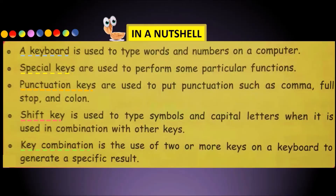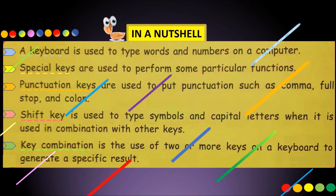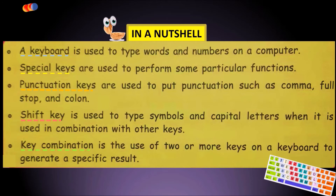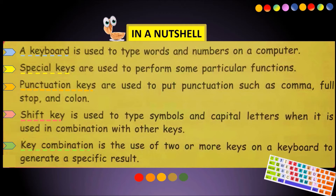In a nutshell: a keyboard is used to type words and numbers on a computer. Special keys are used to perform particular functions. Punctuation keys are used to put punctuations such as comma, full stop, and colon. The Shift key is used to type symbols and capital letters when used in combination with other keys. Key combination is the use of two or more keys to generate a specific result.